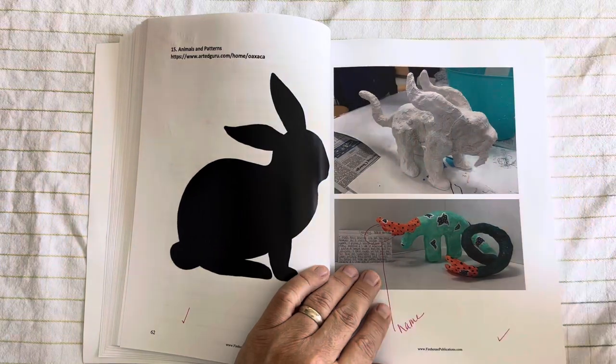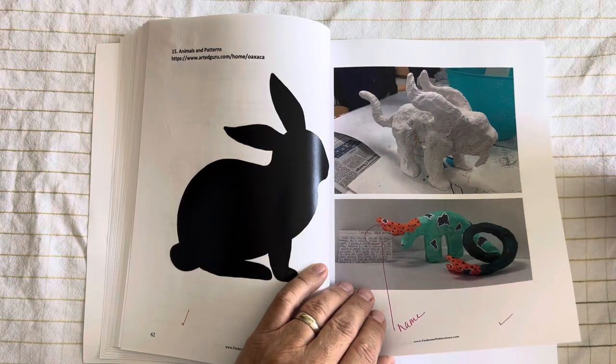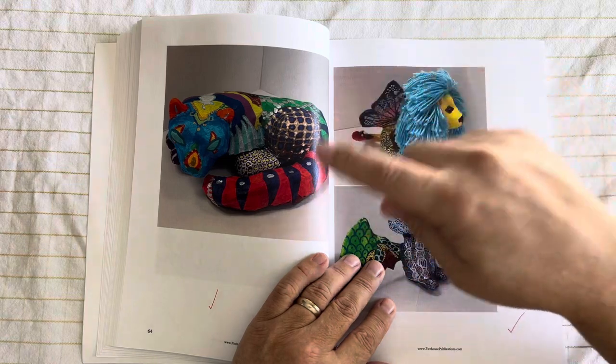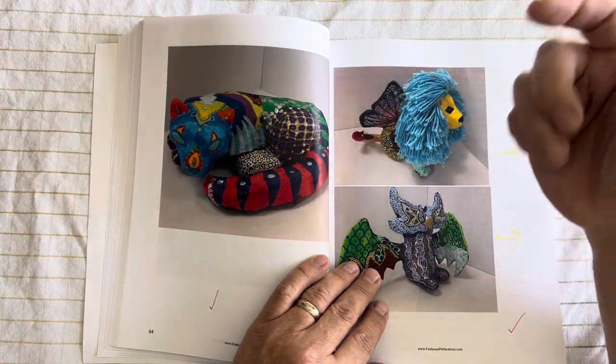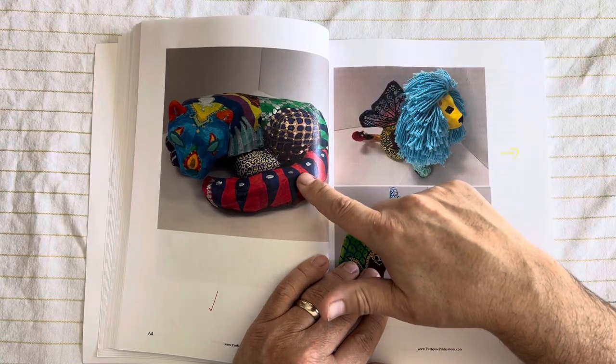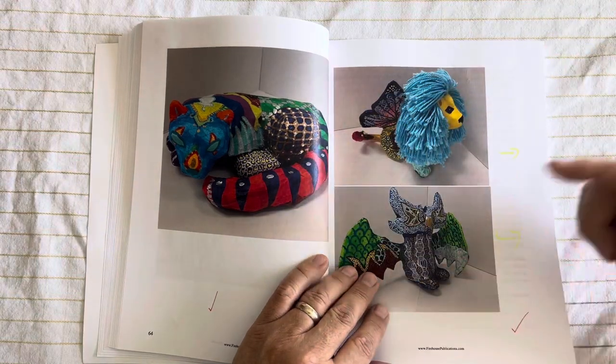We've got animals and patterns, looking at alegria sculptures from Mexico. And then some examples. And I actually use plaster and then put tissue over top of that and then use paint pens to put patterns on there.